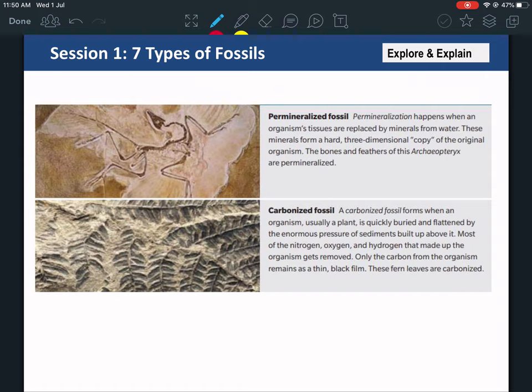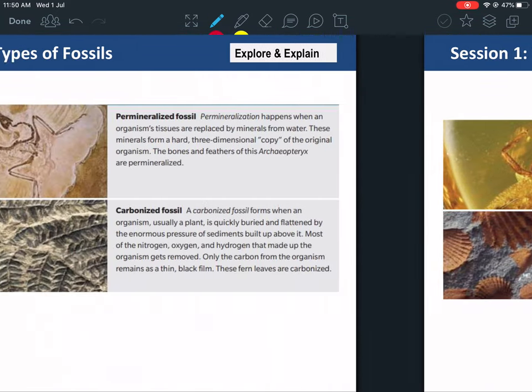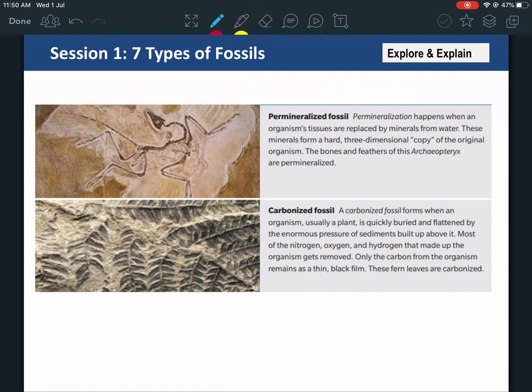Carbonized fossil - you need to know what that is because we're going to do something like that in the lab. A carbonized fossil is when an organism, usually a plant, is buried and flattened by the pressure of sediments. You can actually see the leaves, but the leaves don't exist anymore. They are replaced by carbon. Only the carbon from the organism remains as a thin black film. All the other minerals in the plant have disappeared, and you get only the carbon. That's why it's called carbonized fossil.